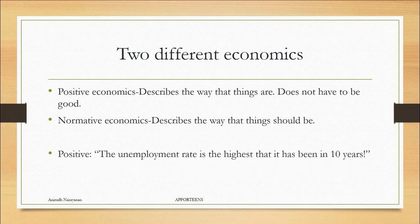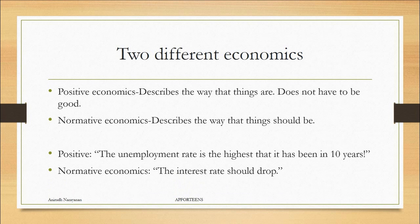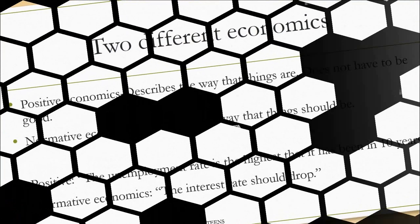So an example of positive economics: The unemployment rate is the highest that it's been in 10 years. That can be proven. That's the way that things are right now. A normative economics statement would be that the interest rate should drop. That's the way that things should be based off of positive economic situations.